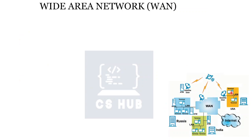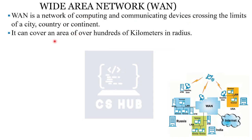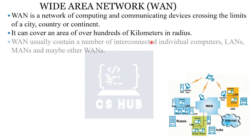This is a WAN — Wide Area Network. It is a network of computing and communication devices crossing the limits of a city, country, or continent. It can cover an area of over hundreds of kilometers in radius and usually contains a number of interconnected individual computers, LANs, MANs, and possibly other WANs.